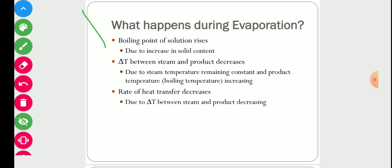Second, the ΔT between steam and product decreases. The temperature of the steam used to heat the solution is normally constant, but the temperature of the solution increases over time because the solution becomes more concentrated, raising its boiling point. So the difference between steam temperature and solution temperature starts decreasing with time. Third, the rate of heat transfer decreases because ΔT is the main driving force for heat transfer, and as ΔT decreases, so does the rate of heat transfer.